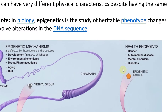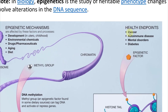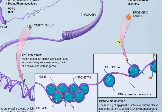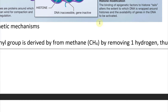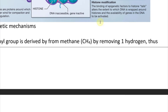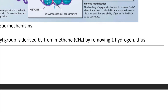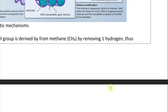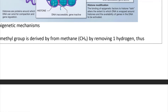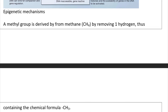So that's an epigenetic factor. The health endpoints — the ultimate effects of epigenetic mechanisms — can include cancer, autoimmune disease, mental disorders, or even diabetes, which is very interesting to think about.